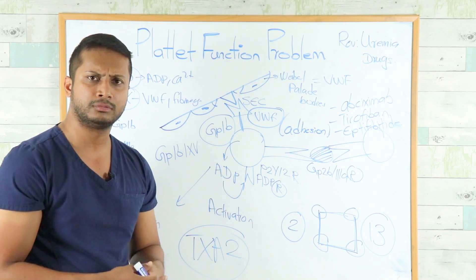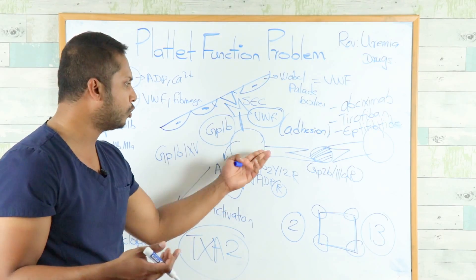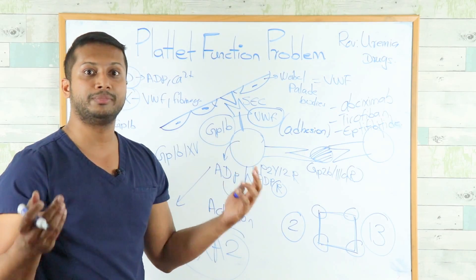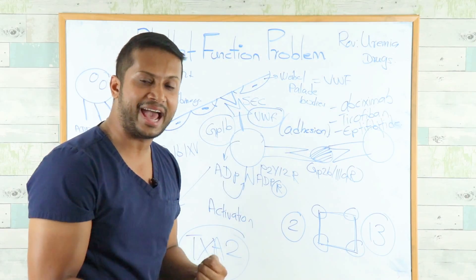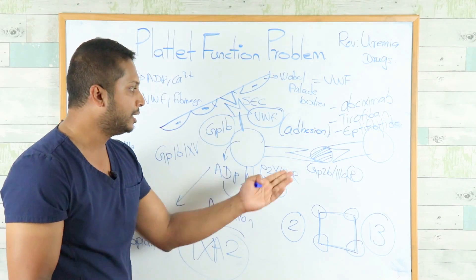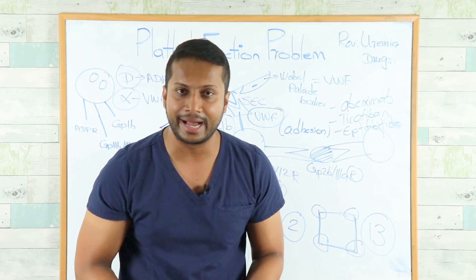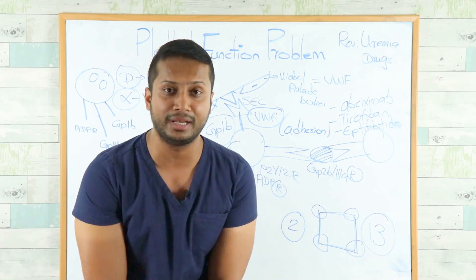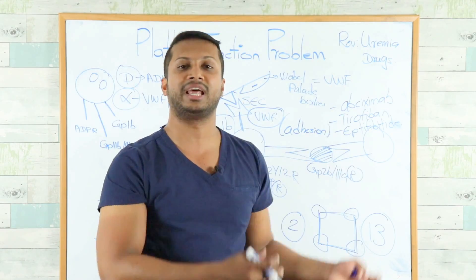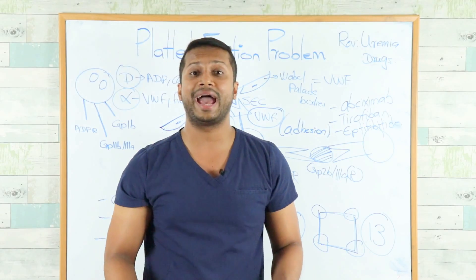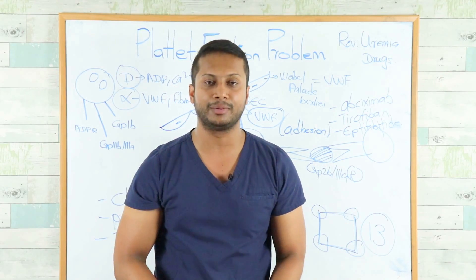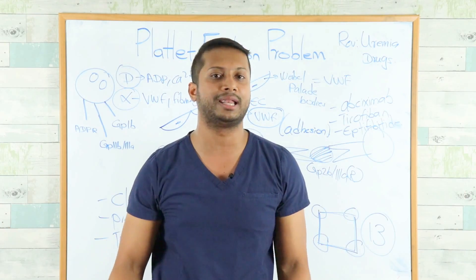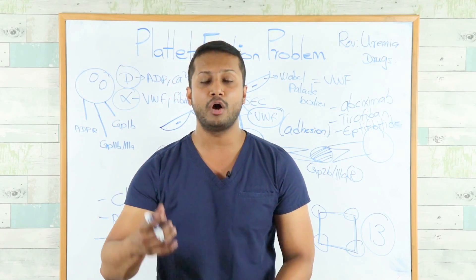In all three genetic conditions — von Willebrand disease, Bernard-Soulier disease, and Glanzmann's thrombasthenia — the platelet count is normal, but the platelet cannot function properly. This is the defining feature of the left arm of our scheme: normal platelet count, abnormal platelet function. Once you know this mind map, you can expand on it and achieve that 240 you deserve.